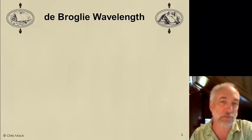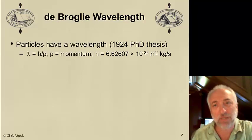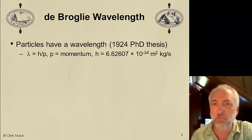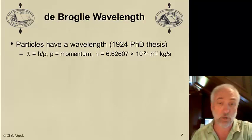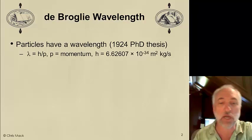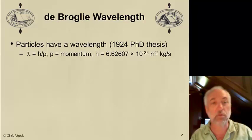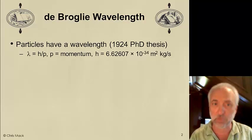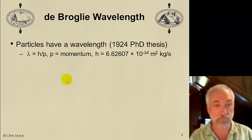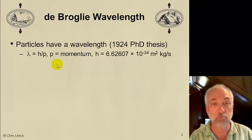Louis de Broglie wrote a PhD thesis in 1924 where he posited that particles, like electrons, have a wavelength. This was not too far after Einstein described light — which we all knew had a wavelength — as being a particle, a photon. This made a complement to Einstein's idea of photons, particles of light, where there's a wave-particle duality, not just to light, but to particles as well — traditional particles like electrons. He showed that the wavelength of that particle was equal to Planck's constant divided by the momentum, p. So if you know the momentum of a particle, you can say what its wavelength is.